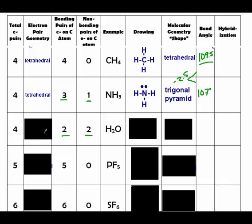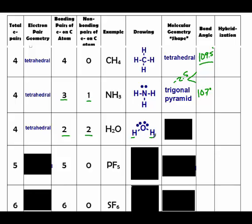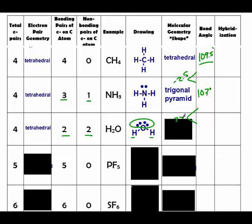Water also has four things coming off, so it's still tetrahedral electron pair geometry. But with water, there are only two atoms and two lone pairs. Just like we saw, when you have two atoms and they're not straight due to lone pairs, the shape is bent. Just like NH₃ went from 109.5 to 107 degrees, these go down another 2.5 degrees, giving a bond angle of 104.5 degrees.